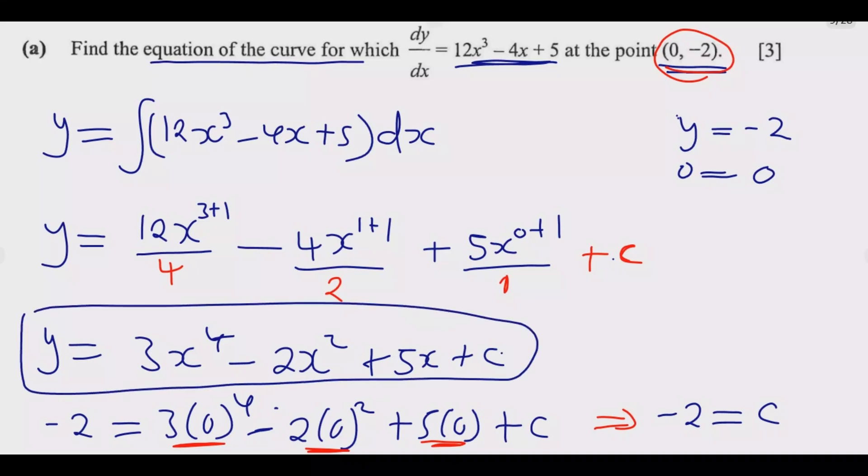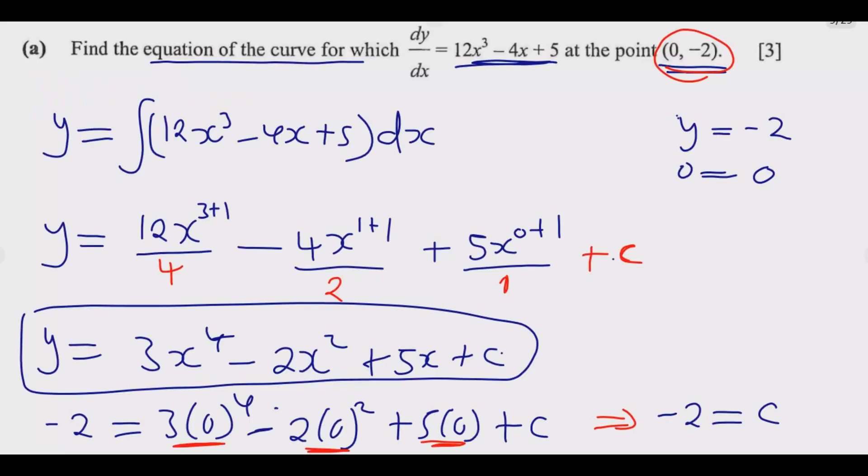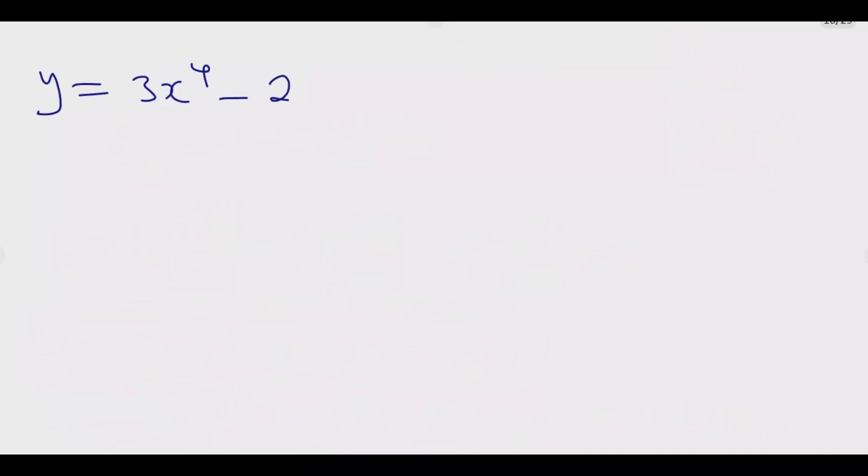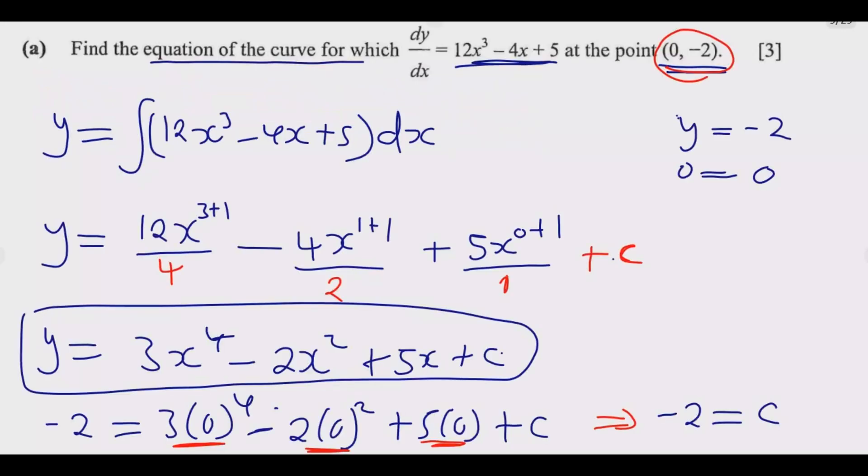So now we can just substitute in this function whatever C, we are going to put in a -2 there. So y equals 3x⁴ - 2x² + 5x - 2, the value of C. Once you do that you're good to go, you would have answered this question, you get these three marks.